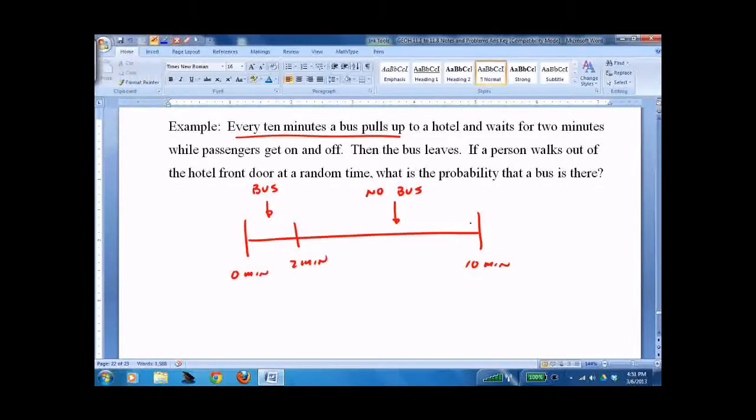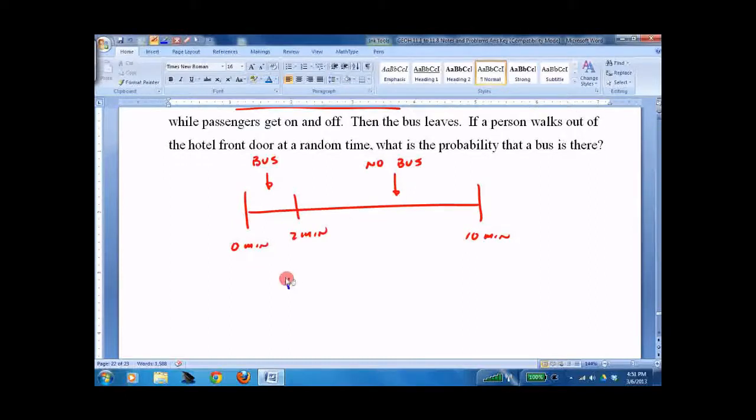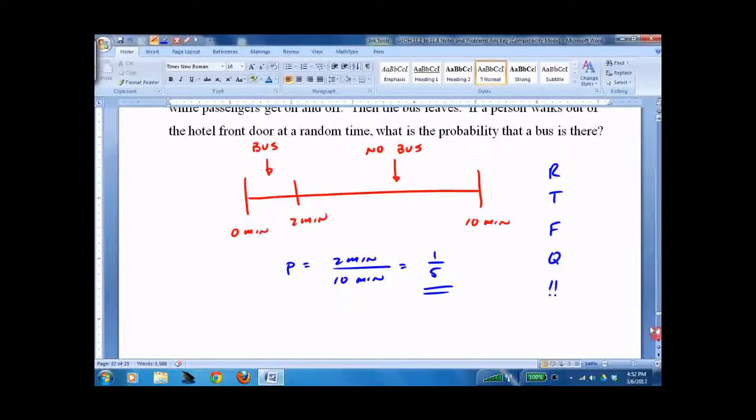If a person walks out the front door randomly, what's the probability a bus is there? Success is the 2-minute window, total is 10 minutes. That's 1 out of 5. And that's it. RTFQ - Read the Full Question. It'll help you out, especially for problems like this. Good luck.